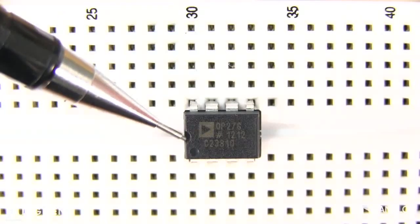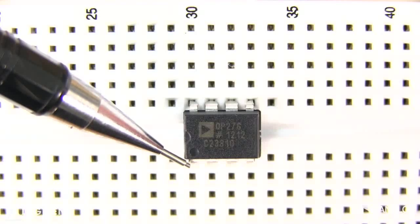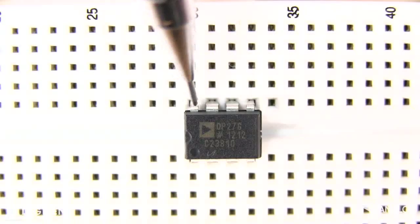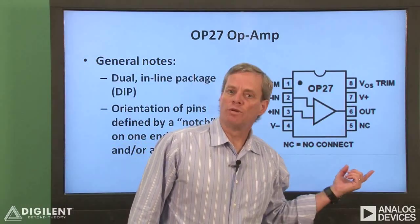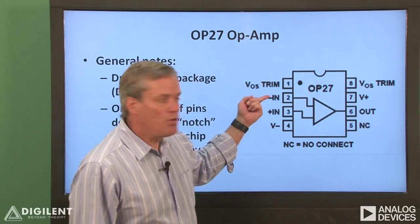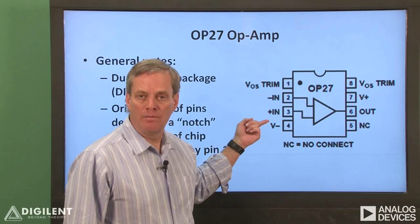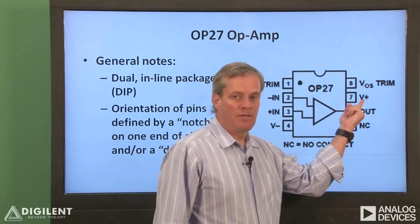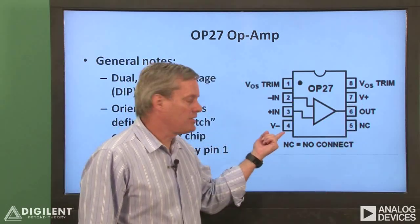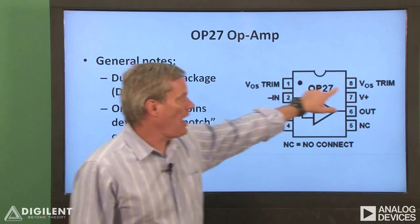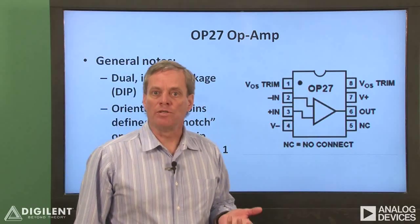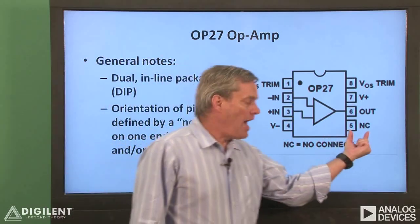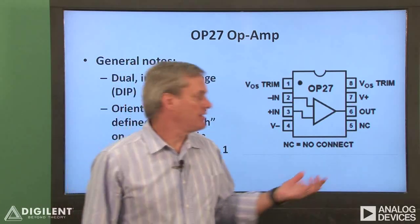This particular op-amp has both a notch and a dot to indicate pin 1. The other pins are numbered counter-clockwise: pin 2, 3, 4, 5, and so on. The individual pin descriptions for the OP27 are: pins 2 and 3 are the inverting and non-inverting inputs; pin 6 is the output terminal; the positive voltage supply is connected to pin 7 and the negative voltage supply to pin 4. Pins 1 and 8 are offset voltage trim terminals — we won't use them in this course. Pin 5 is not connected (NC).